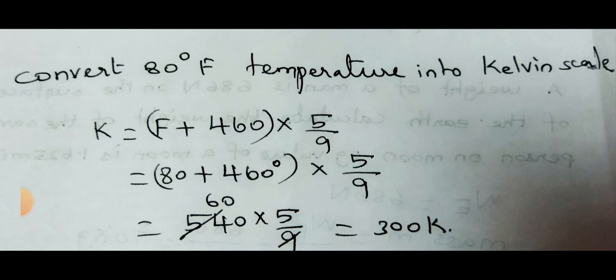Convert 80 degree Fahrenheit temperature into Kelvin scale. K is equal to the formula is in your book. F plus 460 into 5 by 9. So 80 plus 460 into 5 by 9. 80 plus 460 is 540. So if you cancel with the 9, 60, 60 into 5, 300 Kelvin.